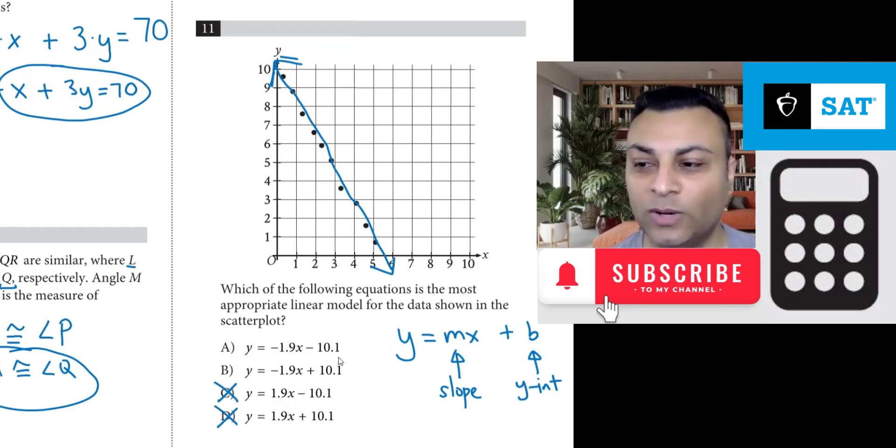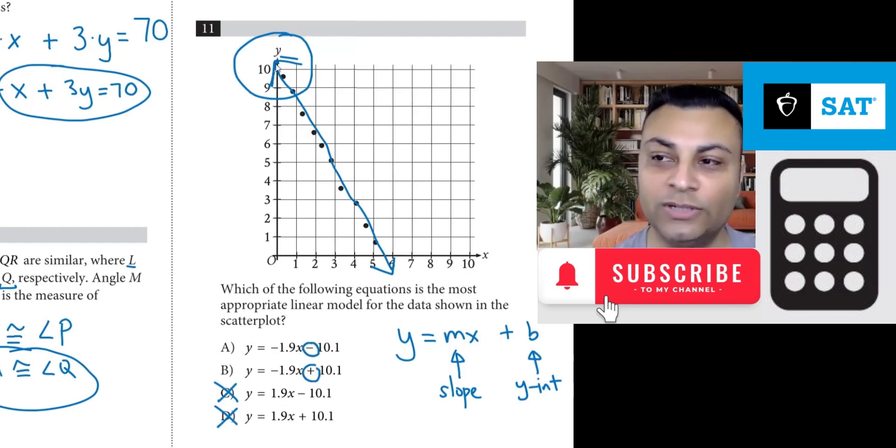The second part is the y-intercept. We see that the y-intercept here is a positive number. Our choices are positive 10.1 and negative 10.1. Well, negative 10.1 is nowhere near here, in fact it's all the way down about 10 units below the origin. So it's not A, so the answer is B.